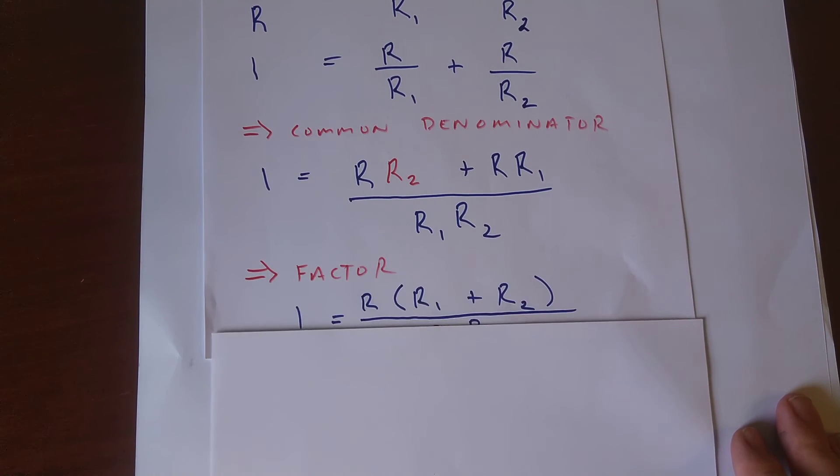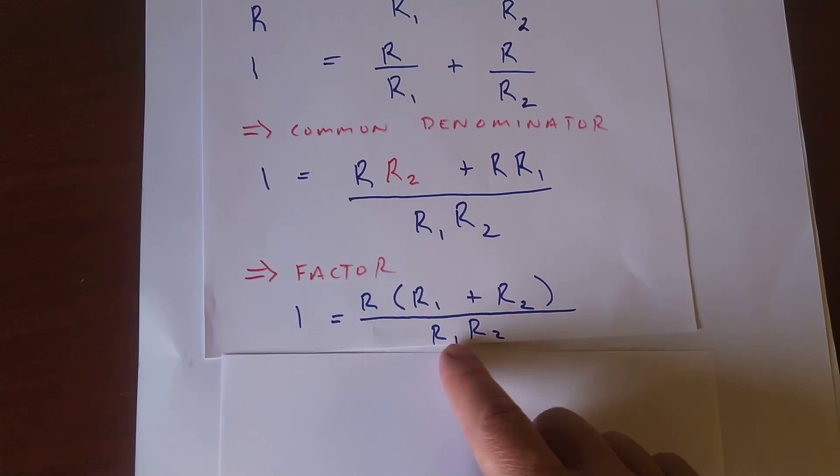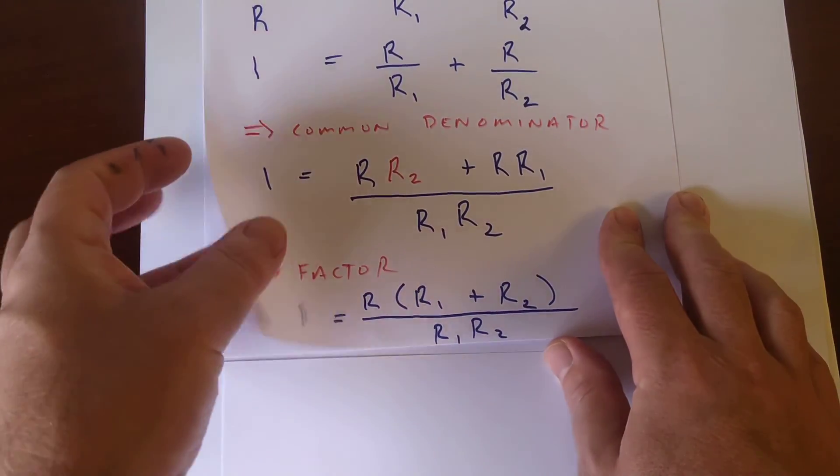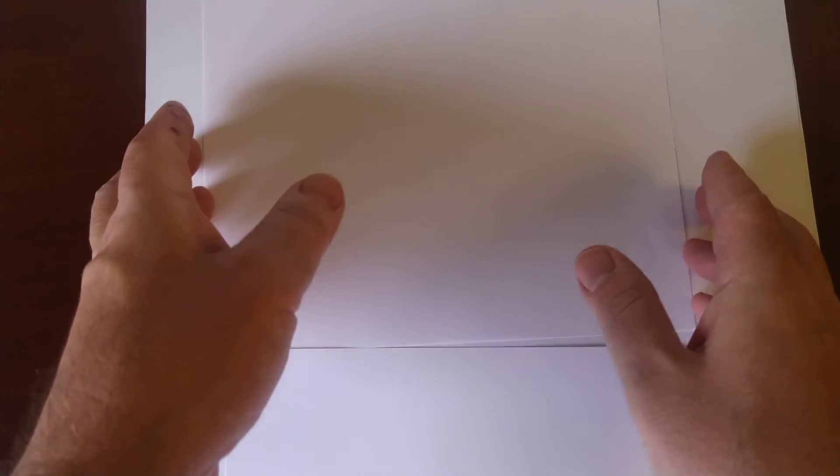And then we factored out the R. And next, where do I put that other piece of paper? That's here. Next, we can cross multiply.